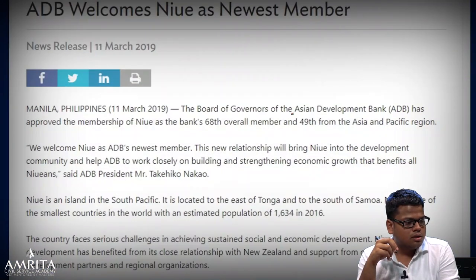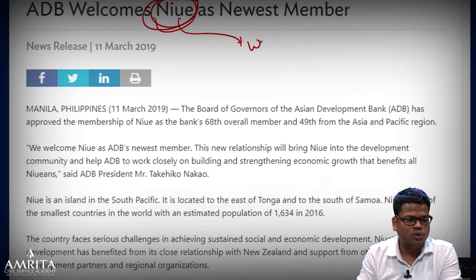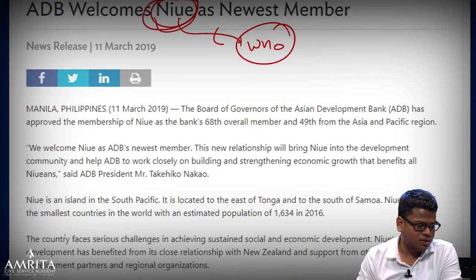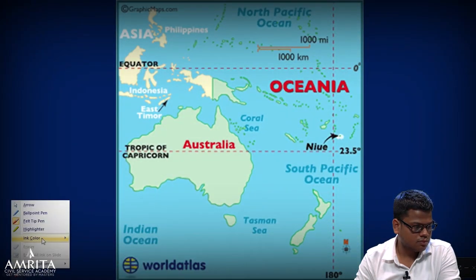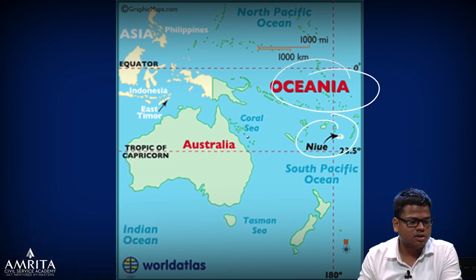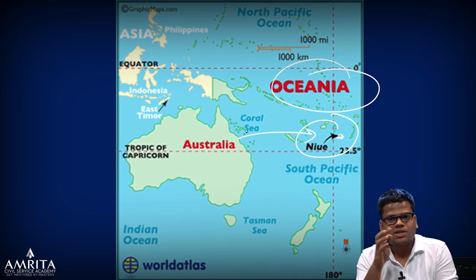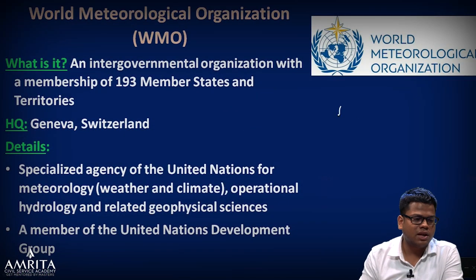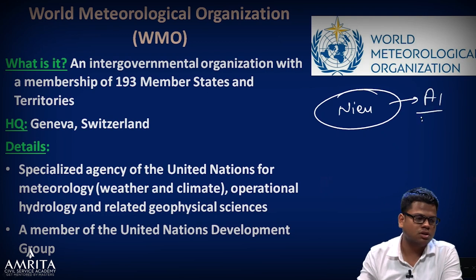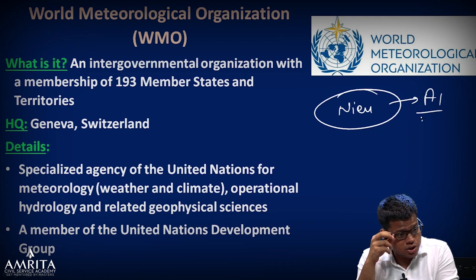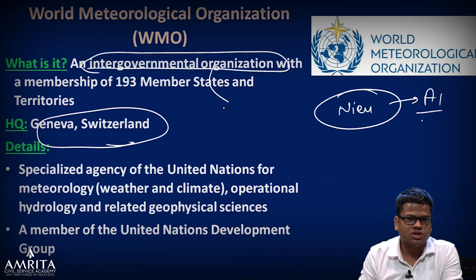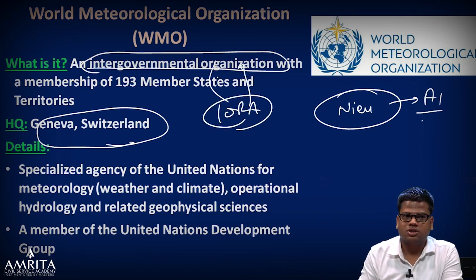ADB recently welcomed a new member. It is not a WHO member but is now an ADB member. Its location is in Oceania, near Australia — in the south Pacific Ocean, above New Zealand. Remember the location because questions may give the name of an island nation and ask about its location in terms of which ocean. Next is the World Meteorological Organization — headquartered in Geneva, Switzerland. It is an intergovernmental organization, unlike IORA which includes business and academia. WMO has 193 member states and is a UN specialized agency and member of the UN Development Group.